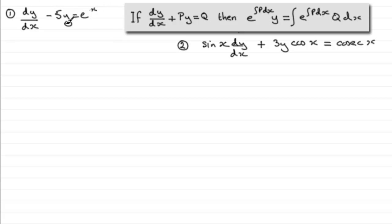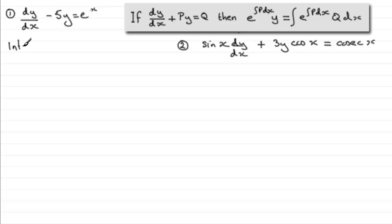Clearly this has got this particular format. The p is going to be minus 5, and the q is e to the power x. So what we need to do is first of all find out what the integrating factor is going to be. The integrating factor is e to the integral of p dx.